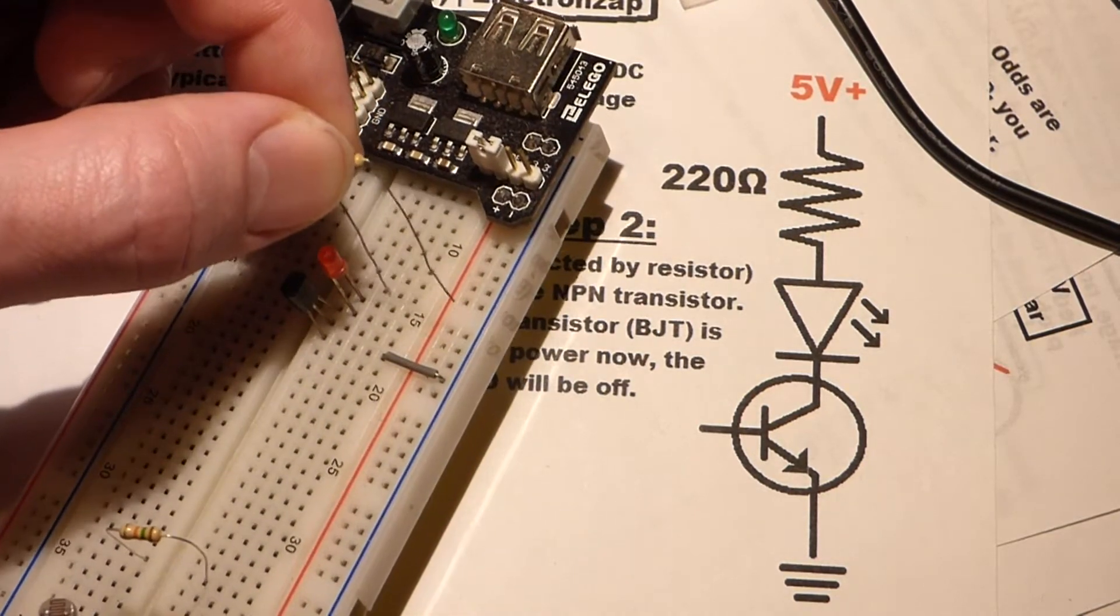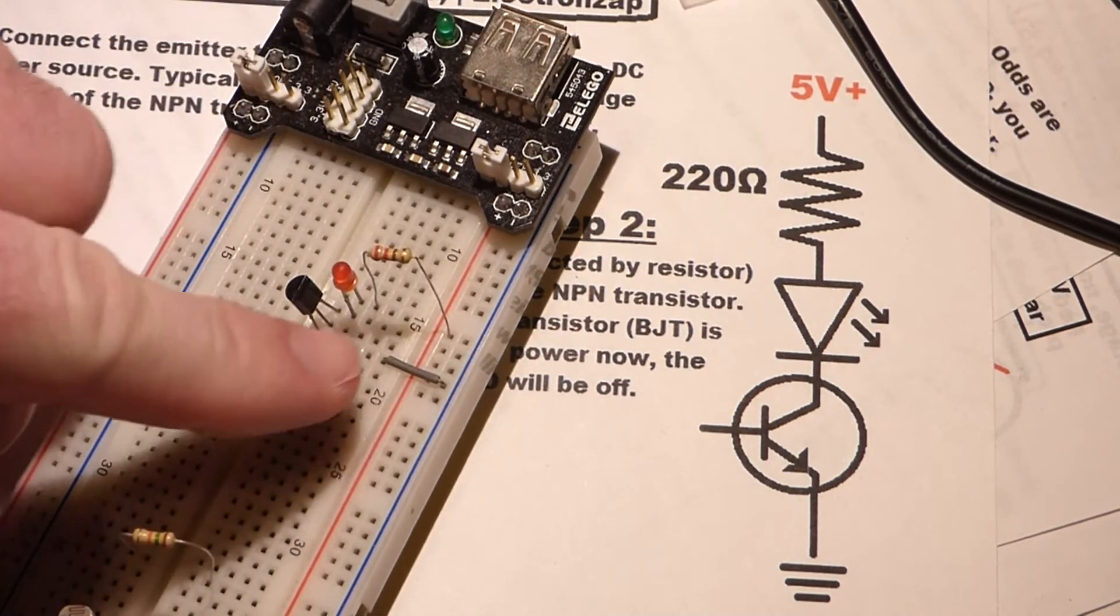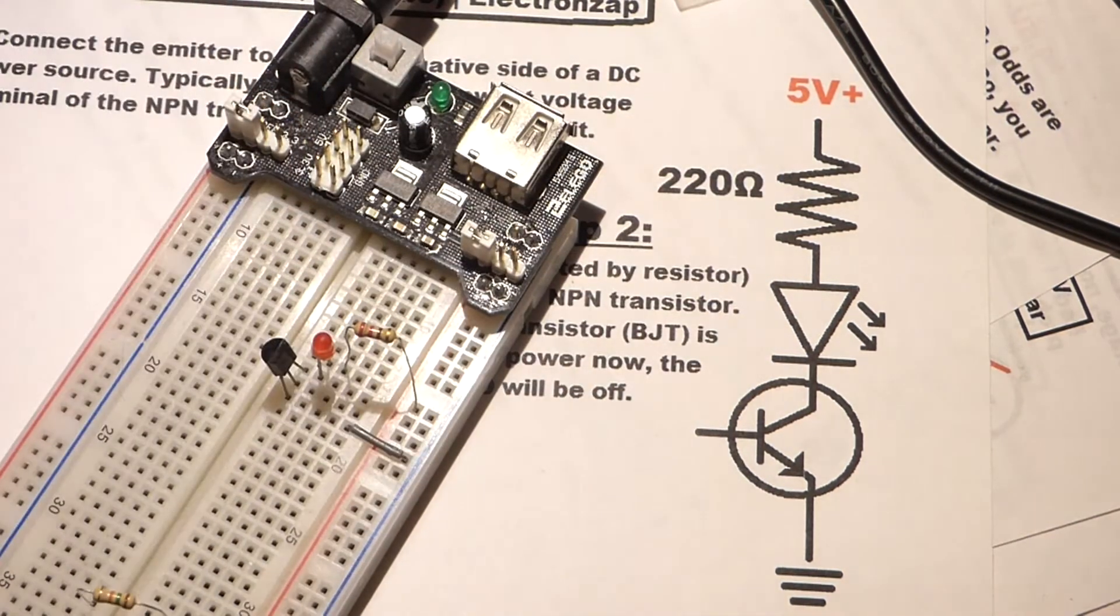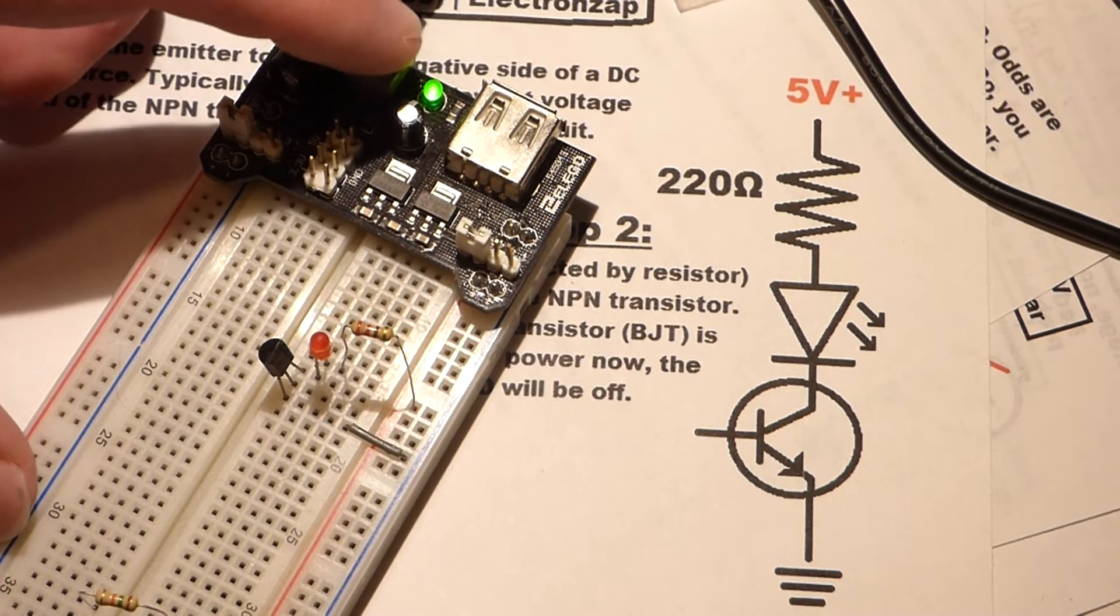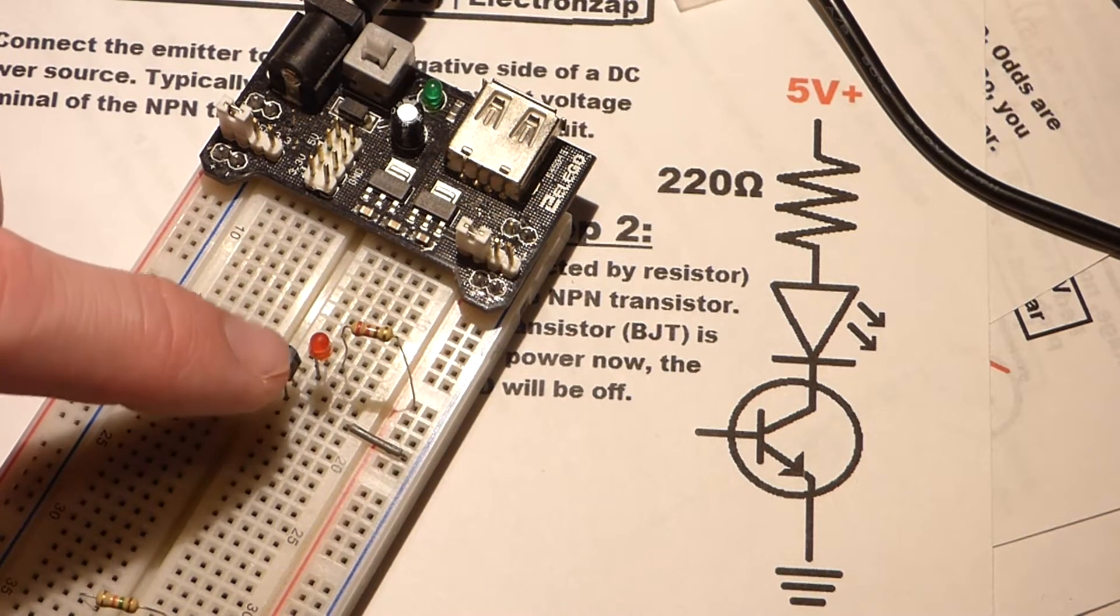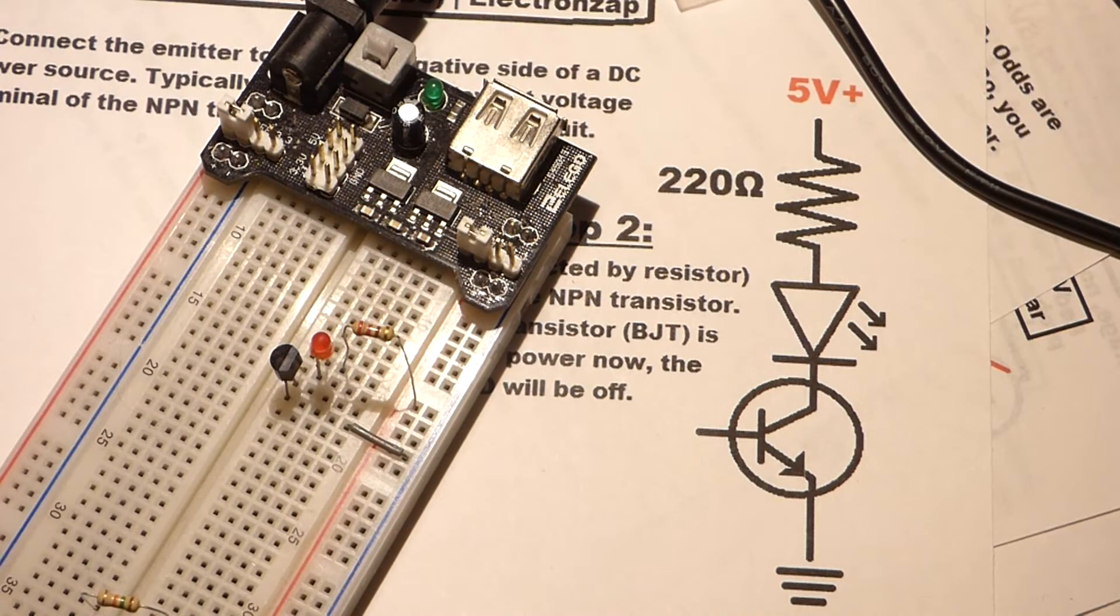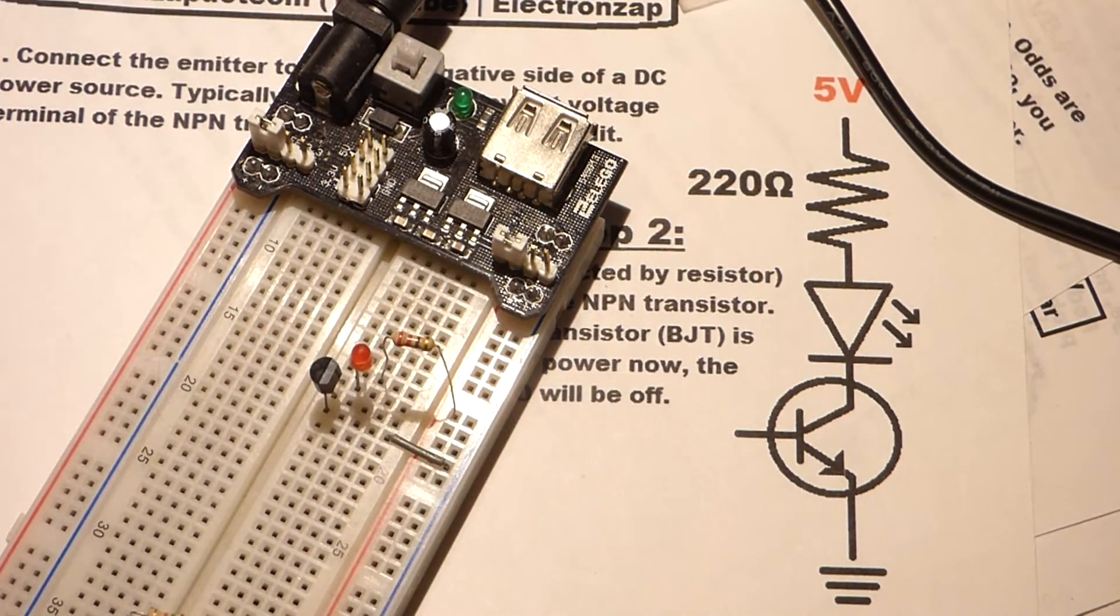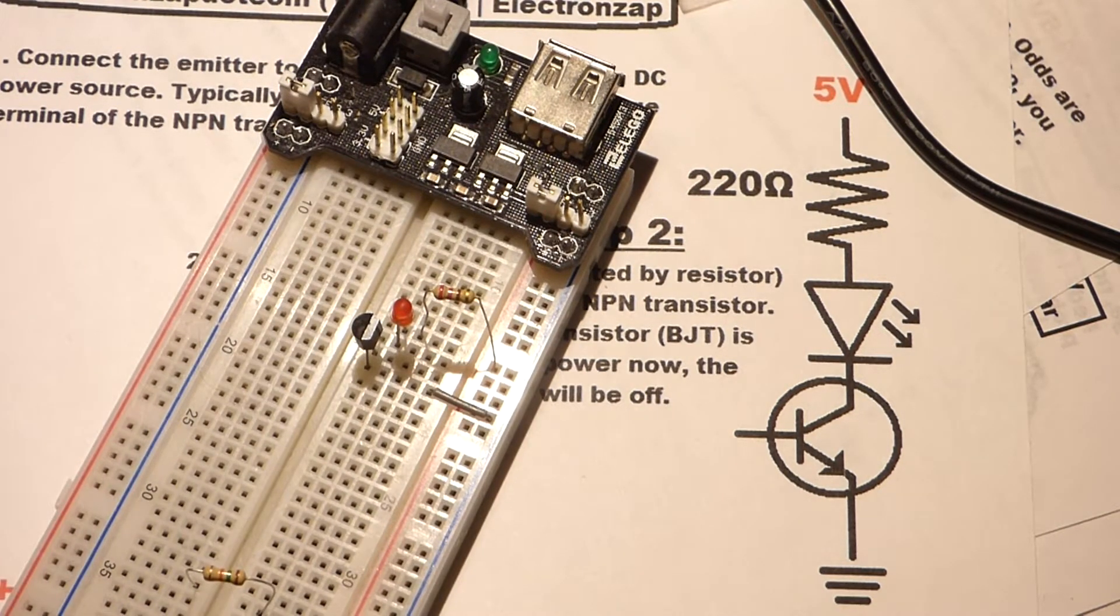So that's going to go from the anode, the long lead of the LED, to the positive rail there. So now we have a path here, but if I turn the power on, the LED is not going to turn on because the transistor is normally off. We need to get a positive voltage of about 0.6 volts at least to the base of the transistor for it to start conducting.